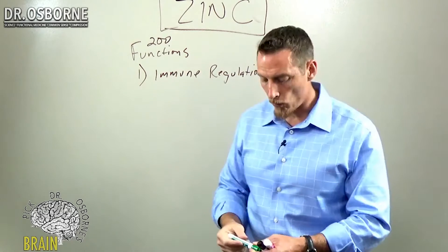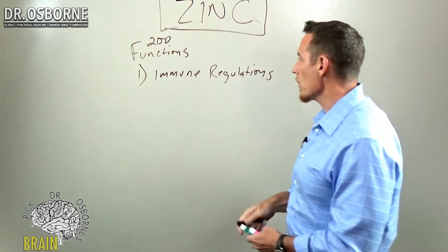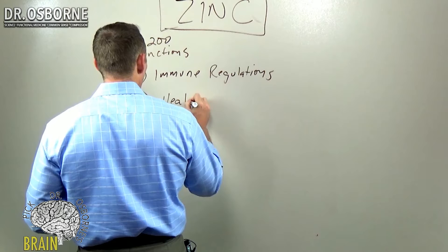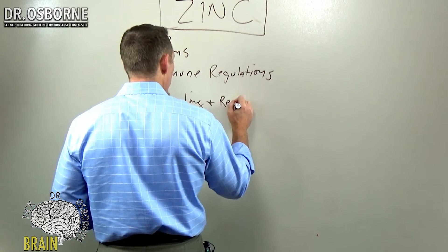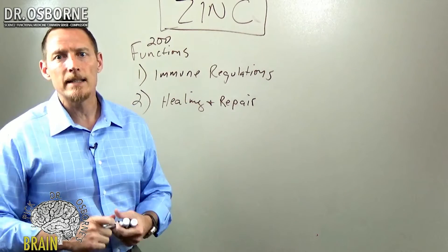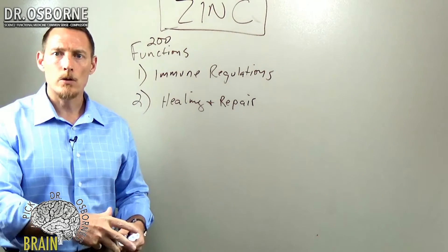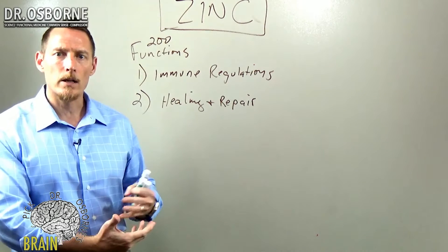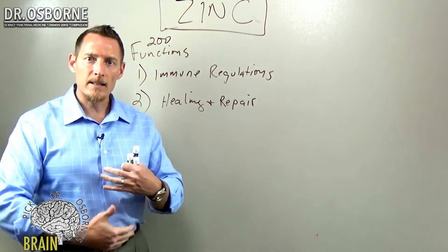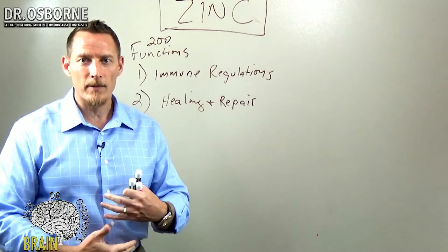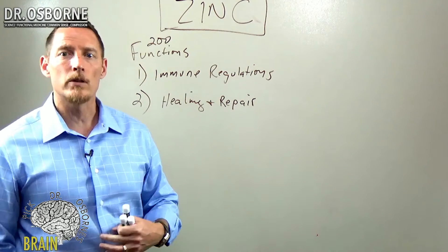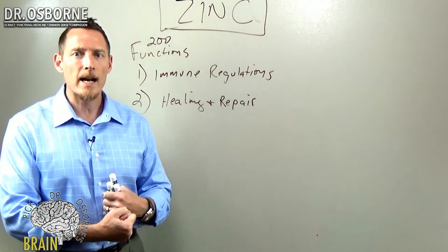Another function of zinc that's very crucial is healing and repair. Your body needs zinc. Remember your body's constantly healing and repairing, constantly breaking down old tissue so that you can replace it with new tissue. That process of healing and repair is very critical. If you've ever had skin cells slough off, and you have, those are cells that are dead, that are dying, that are sloughing off. Basically your body is getting rid of those old cells so that you can repair and bring in new cells.